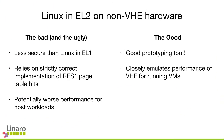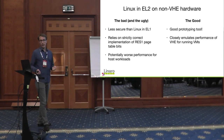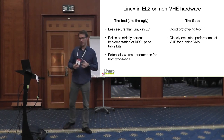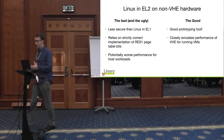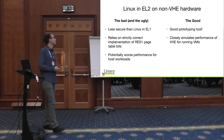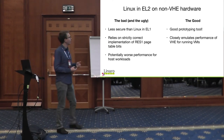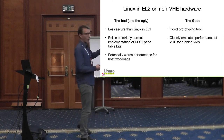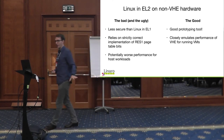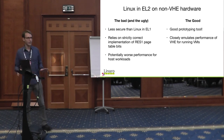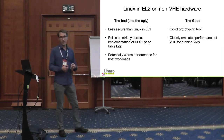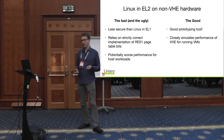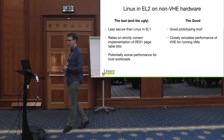The bad news about Linux in EL2 is that it's less secure than Linux in EL1, it relies on strict architectural correctness when implementing the CPU, and it potentially gives worse performance for host workloads. I'm not trying to upstream this or argue it should be used in production. But the good news is it's a really good prototyping tool, allowing us to optimize KVM ARM for VHE before VHE hardware was available, since it closely emulates the performance of a current system with VHE.